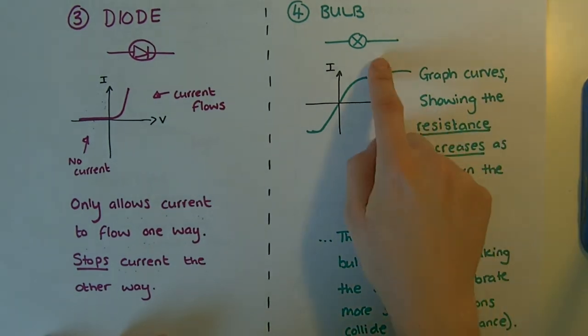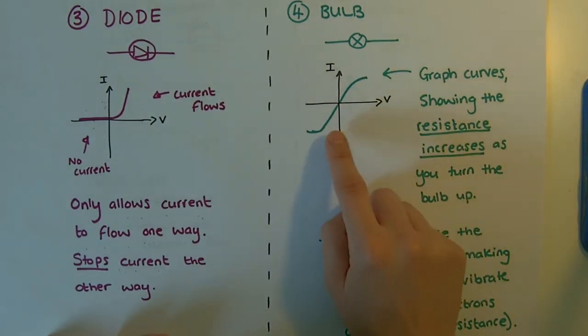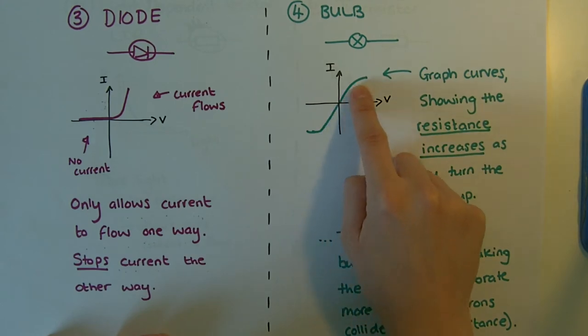Device number four is a bulb. A fairly common symbol that we should know. This is the graph. It's an S shape.